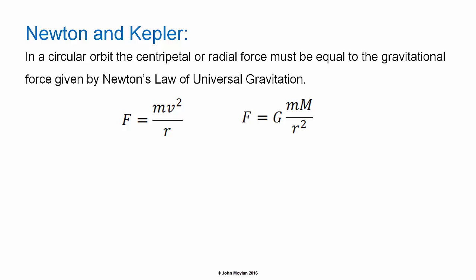Where v is the tangential velocity in meters per second, r is the radius of the circle in meters, m is the mass of the object in kilograms, capital M is the mass of the central body in kilograms, capital G is the universal gravitational constant, and F is force in Newtons.